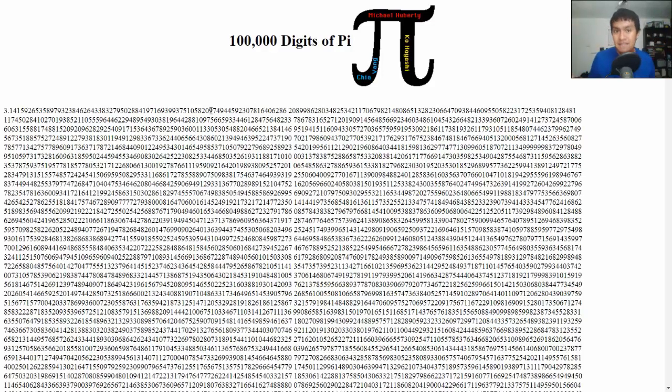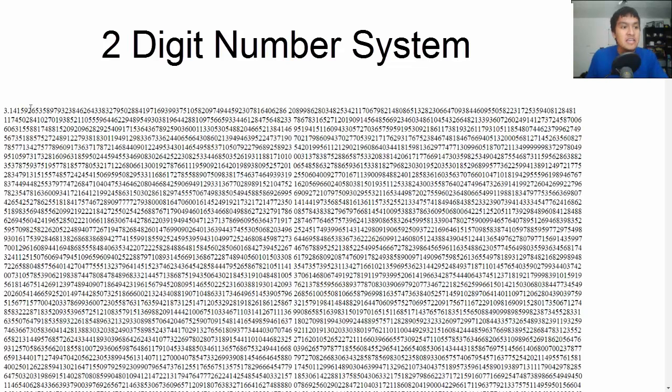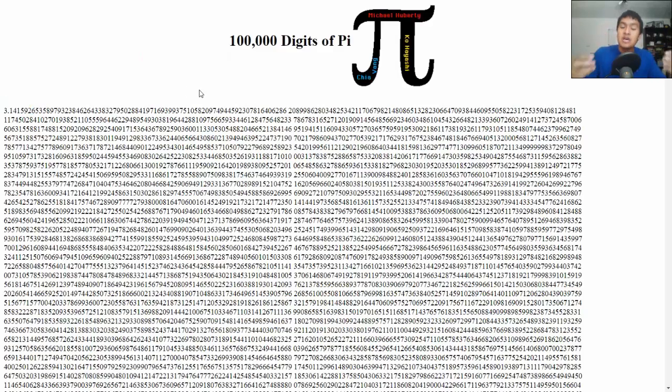Now the system I have is a two-digit number system. So I take two digits at a time, so like 1-4, and I have one image for that. So instead of having 10 images, I have 100 images from 0-0 to 99. So 14 is Dominic, 15 is Duncan, 92 is Preston, 65 is a judge, and so on. And so that allows the repetition to go down a little bit. Of course, when you have 100,000 digits of pi, you still have a lot of repetition, but it's not going to be as much as a single-digit system.